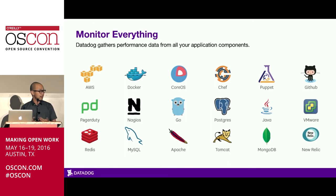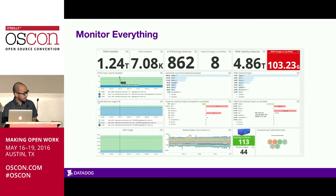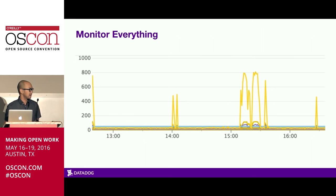Thousands of companies send us their metrics every day, and we process hundreds of billions of points a day. Here's an example of a dashboard of metrics — just by being able to display the metrics we collect in a coherent fashion, you can gain a lot of insight into what's actually going on with your service. In this case, something funny is going on with that yellow line over there.